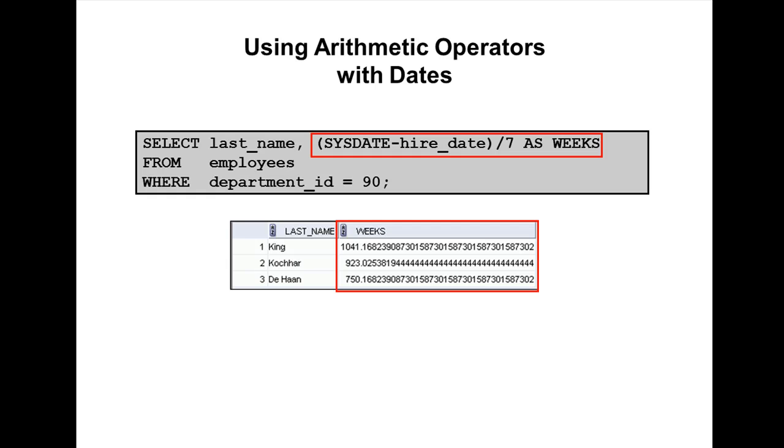Okay, so in this slide, we display the last name and number of weeks employed for all employees in department 90. It subtracts the date on which the employee was hired from the current date and divides the result by seven to calculate the number of weeks that a worker has been employed. Make a note: SYSDATE is a SQL function that returns current date and time. If a more current date is separated from an older date, the difference is a negative number.